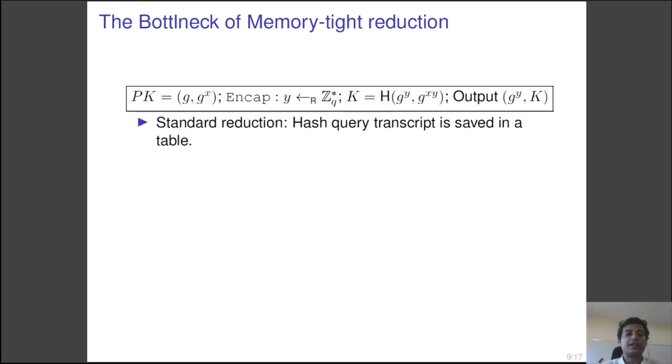So first we are going to discuss the Cramer-Shoup variant. In this variant, recall the key derivation function hashes both g to the power y and g to the power xy. In the usual reduction, the random oracle transcripts are saved in a table. However, this cannot be done in a memory tight case. The challenge here is to simulate the random oracle in a memory efficient way, maintaining consistency between the simulation output of the hash oracle and the decapsulation oracle. We need to be consistent with the output of these two oracles by maintaining a small state.